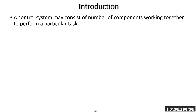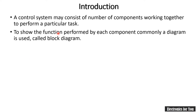Whenever we talk about a control system, it is consisting of number of components working together to perform a particular task. And to show the function performed by each component, commonly a diagram is used and this is called as block diagram.